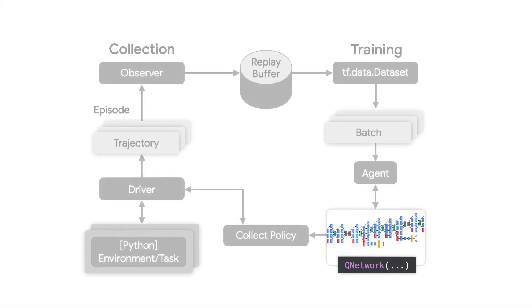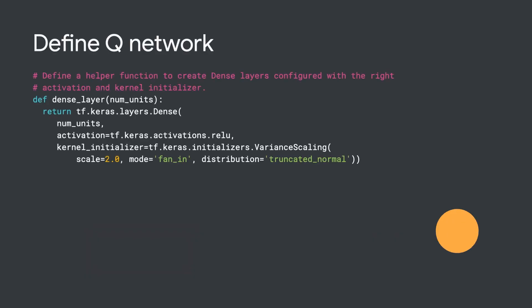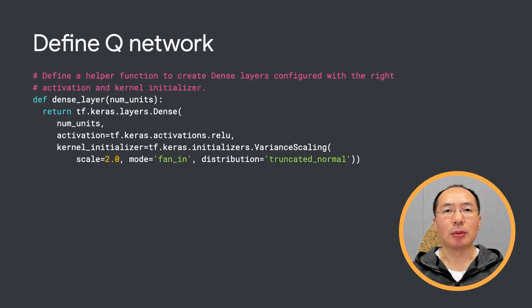Now we define our Q-network. As I mentioned, we're going to use a neural network to represent the Q function.